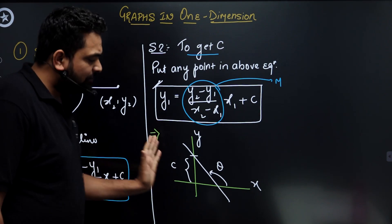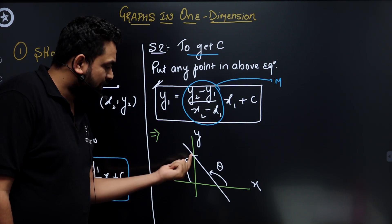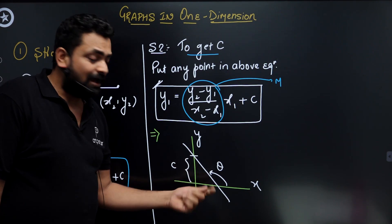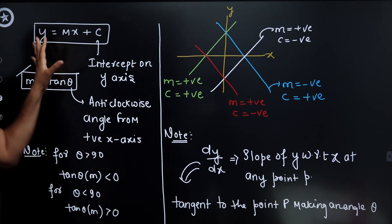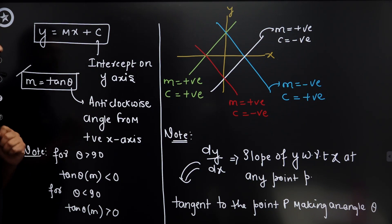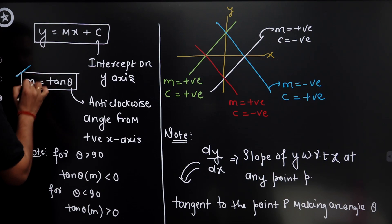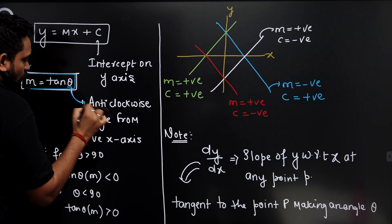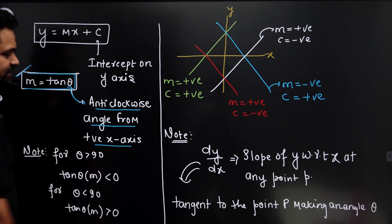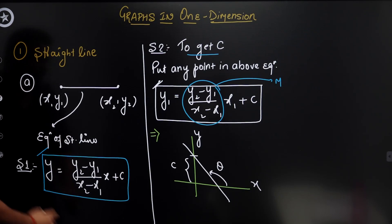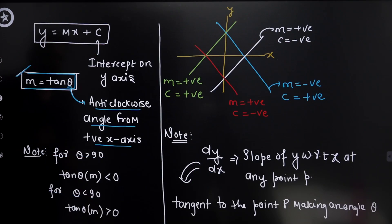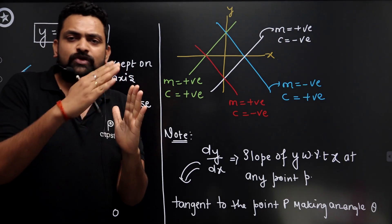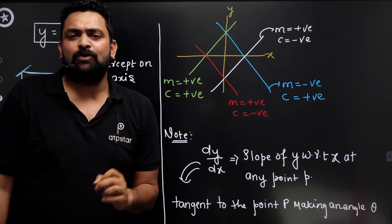I have made a random line. Where c represents the intercept on the y-axis, and tan(theta) represents the slope of this line. y equals mx plus c is the actual equation of a straight line. The value of m is tan(theta), where theta is the anti-clockwise angle from the positive x-axis. Keep this — anti-clockwise angle from the positive x-axis. And c is the intercept on the y-axis: where the straight line cuts the y-axis.